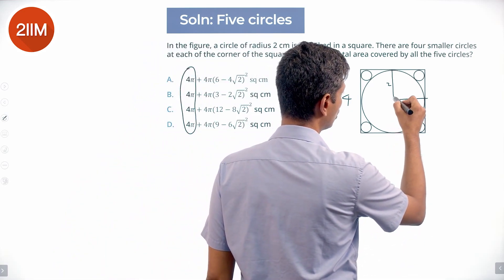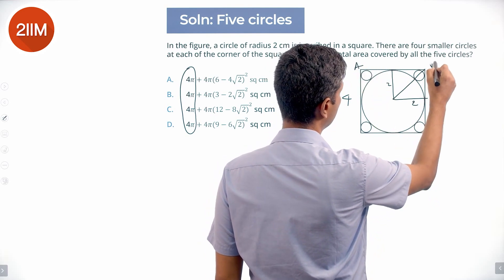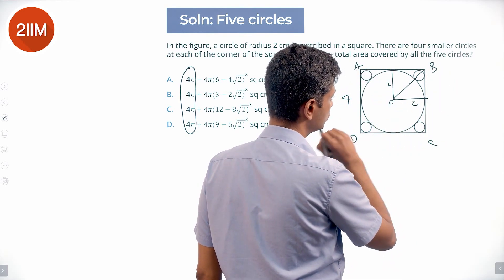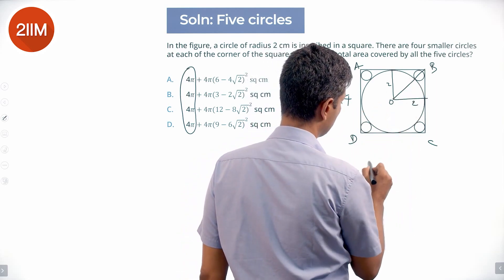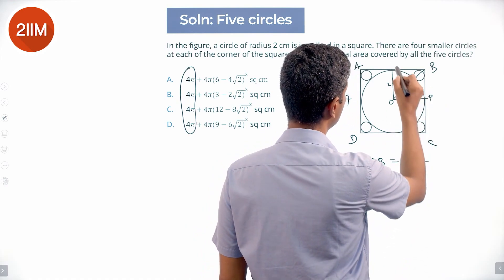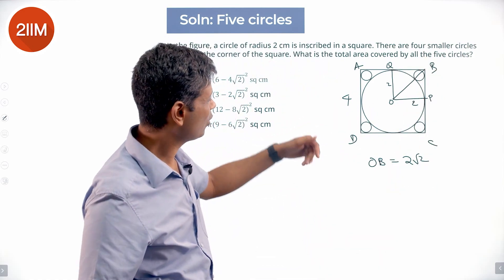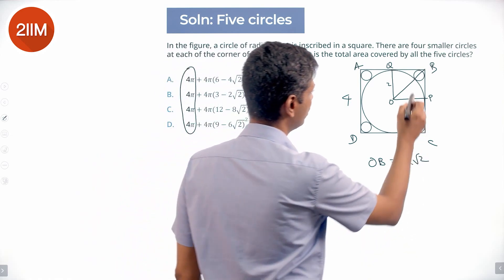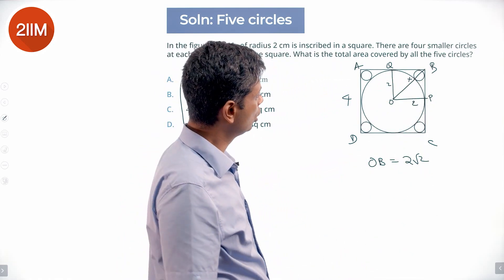Draw a diagonal. Say this is A, B, C, D, O. OB is equal to 2√2, because OP is 2 and OQ is 2, and QBPO is a square, so OB is 2√2.